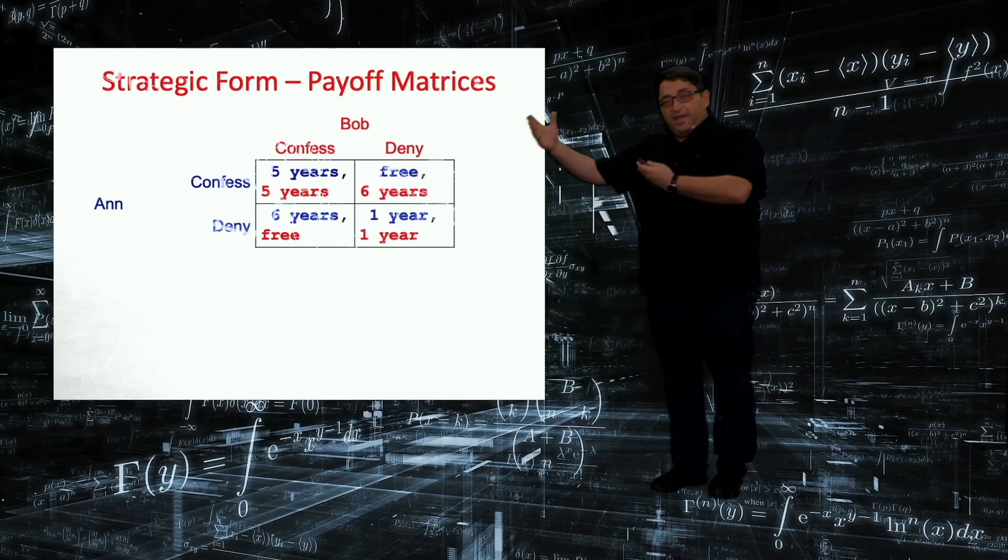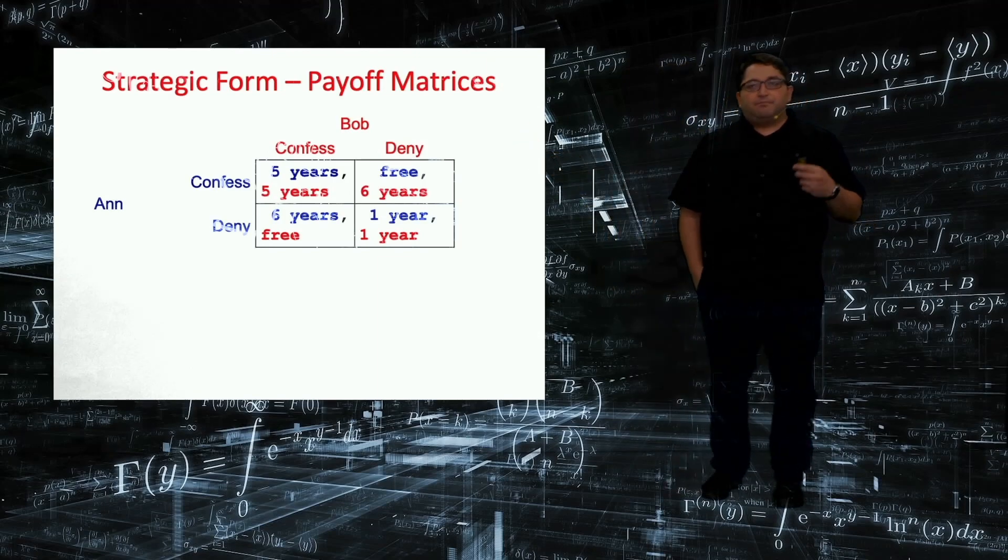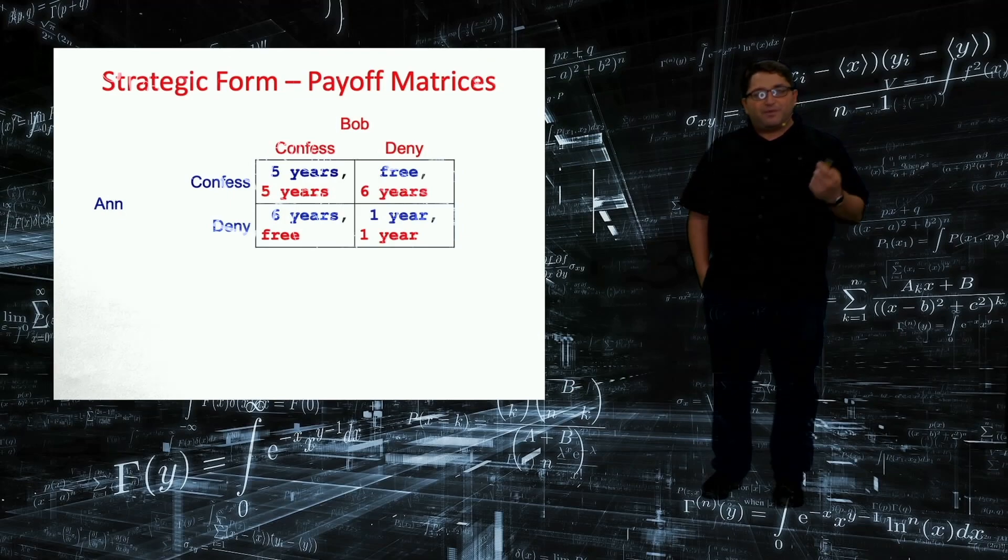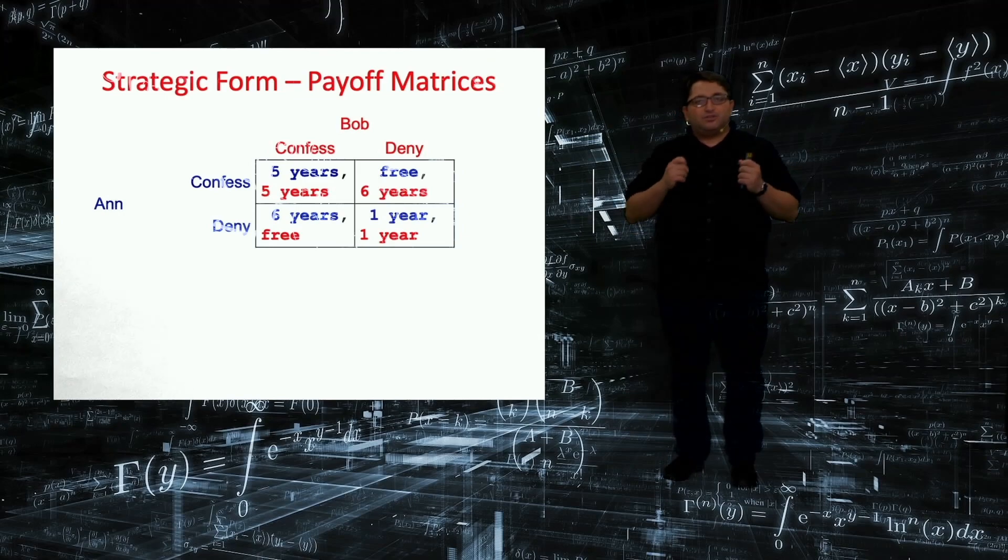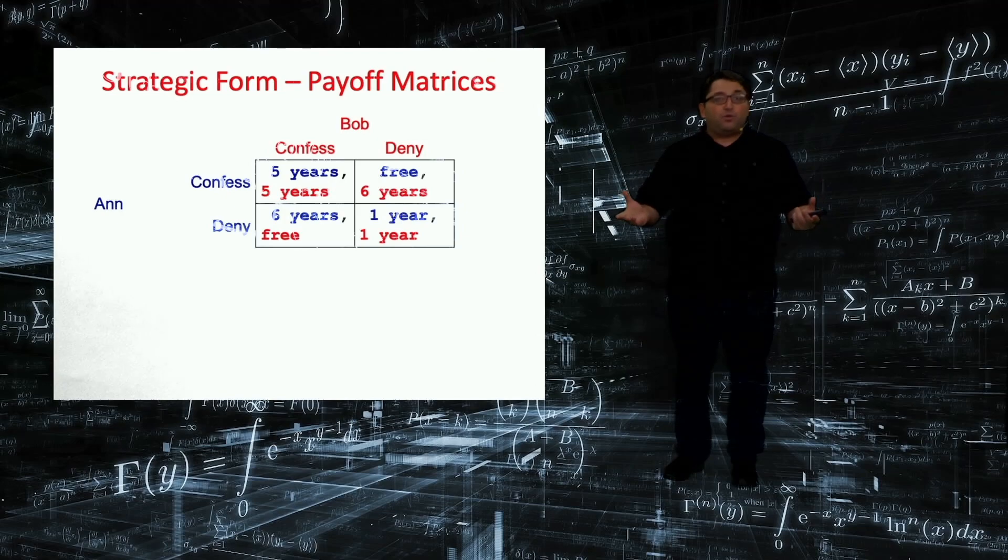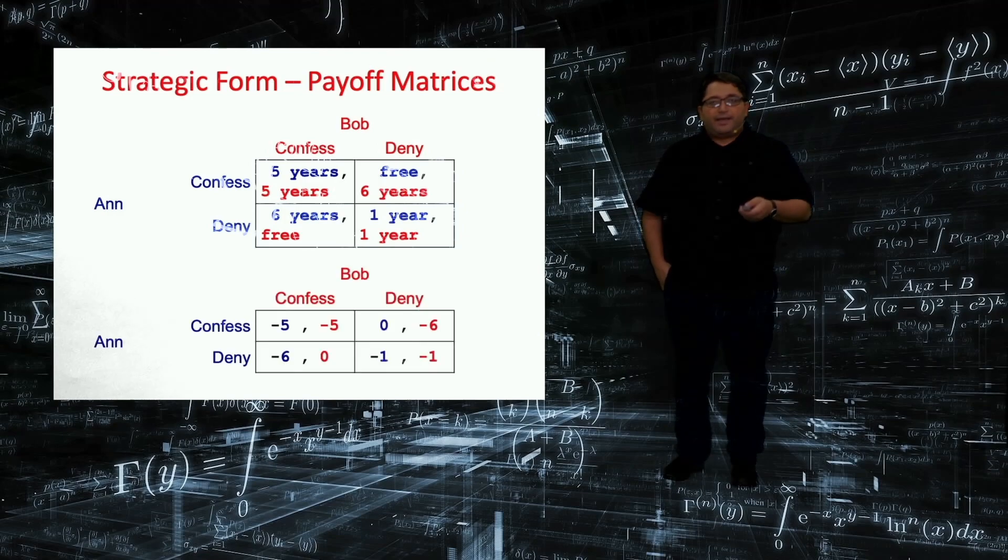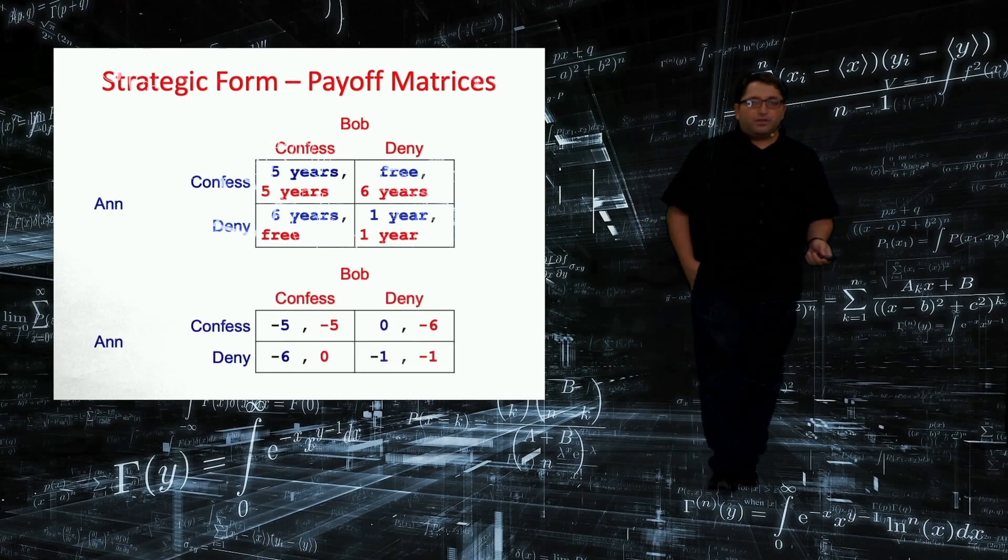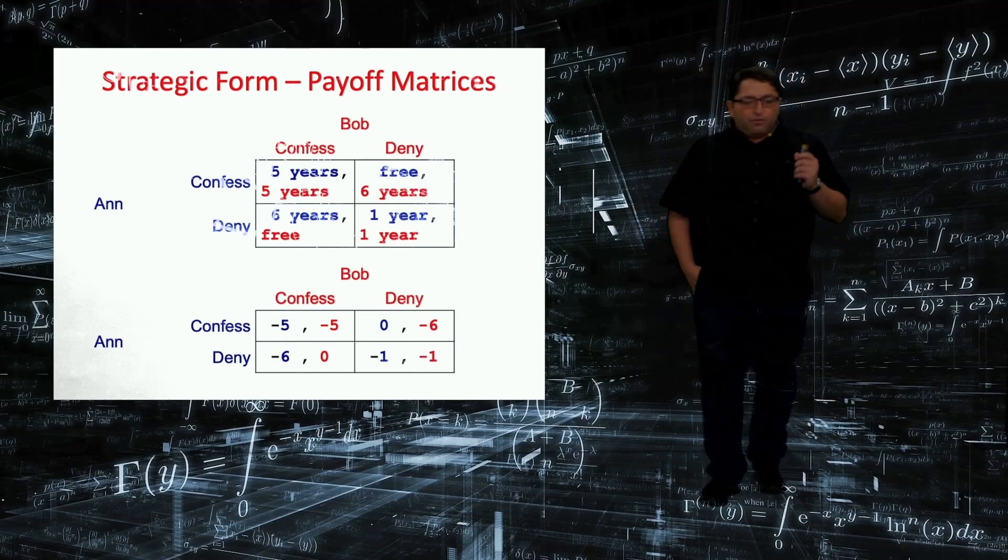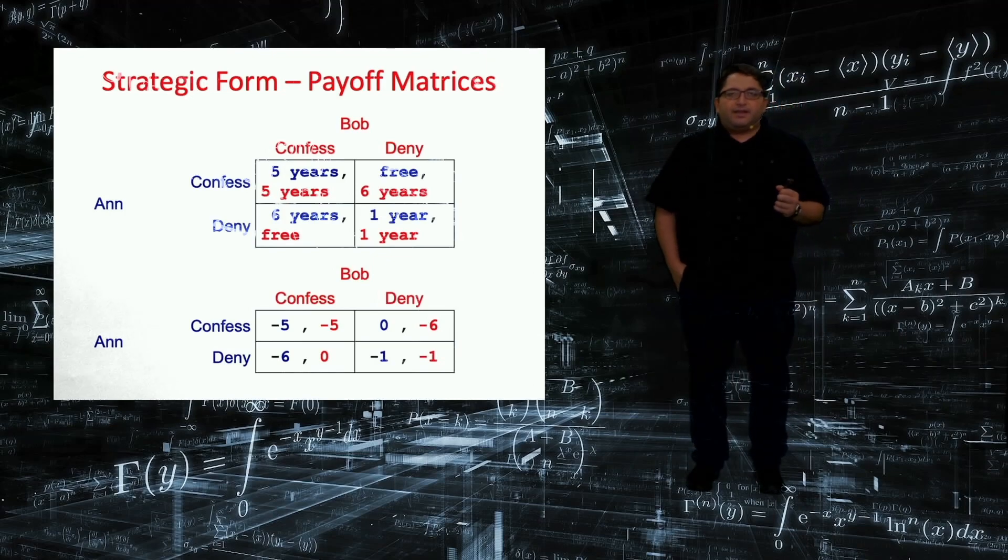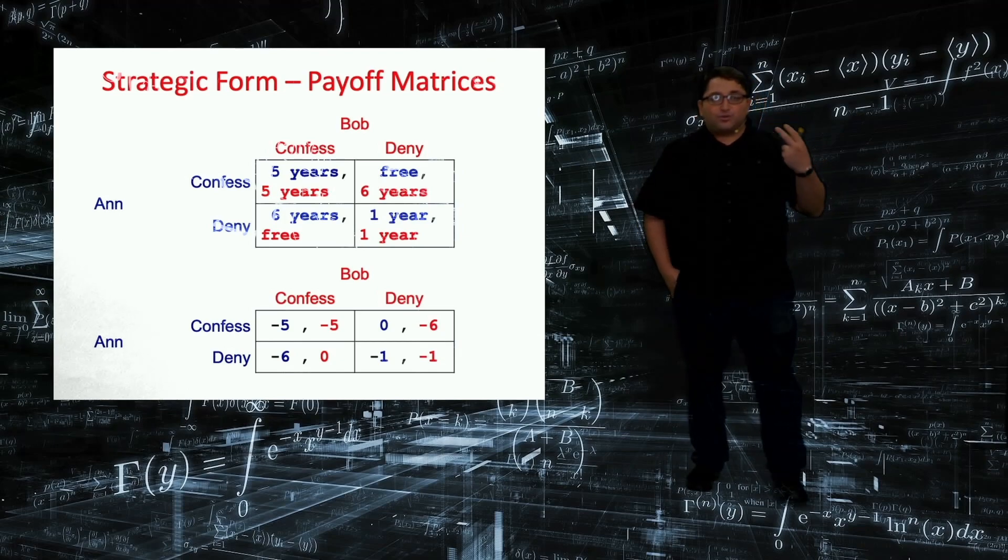So the whole game is represented in the payoff matrix. But as economists, we are using mathematics extensively, we would like to translate it even further into real numbers, which is the utility number. So what is the utility or disutility of spending six, five, one year in prison? So I can say that the utility of six years of prison is minus six, five years minus five, and so on.